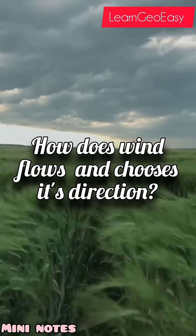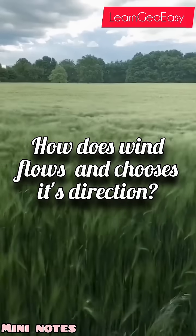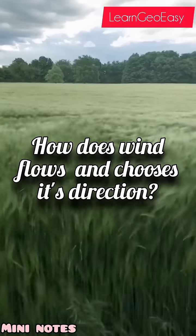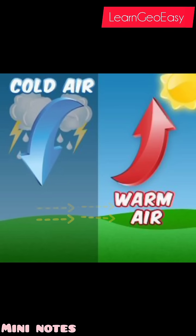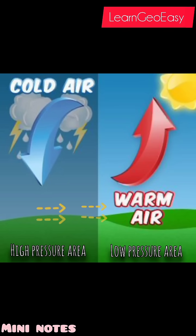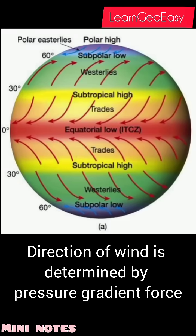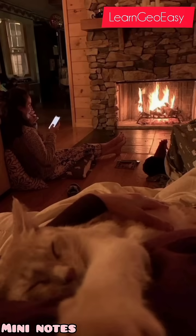How does wind flow and choose its direction? Wind is the movement of air from high pressure areas to low pressure areas. The direction of wind is determined by the pressure gradient force.